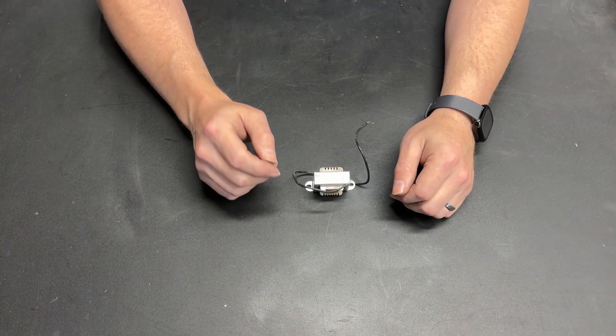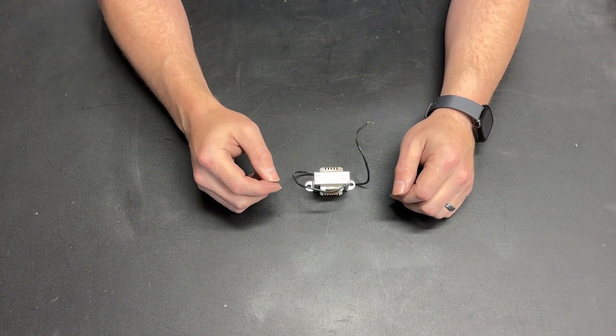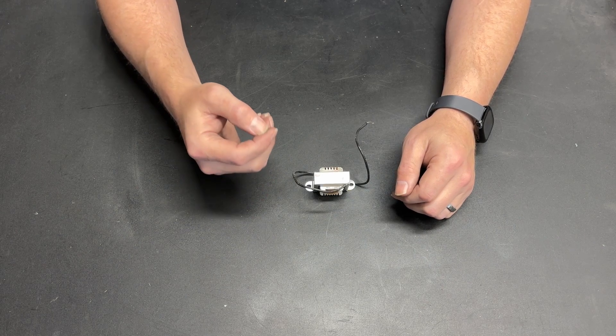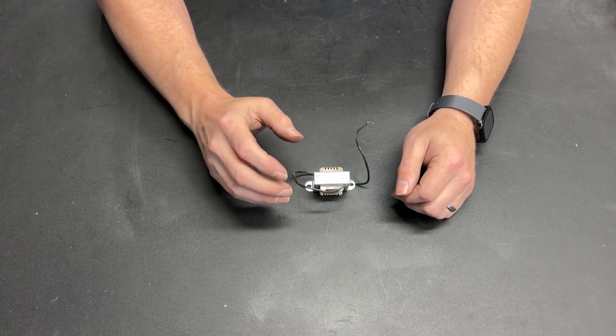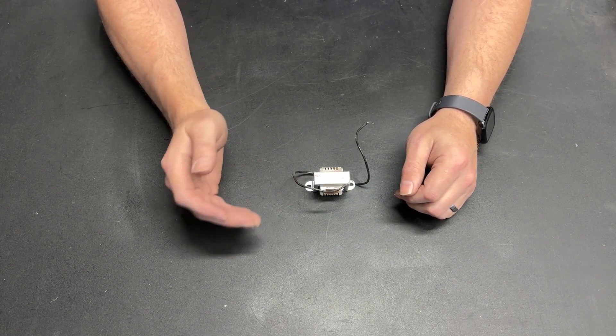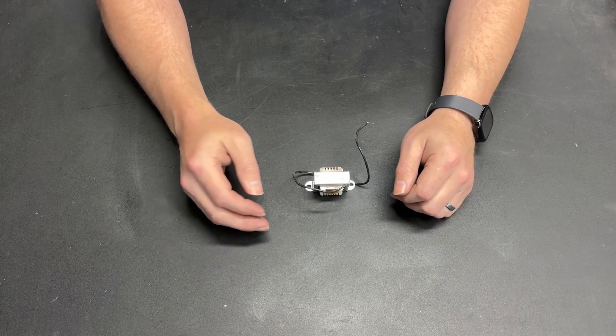Every time we get a spark, that's a tiny amount of the brush, or a tiny amount of the copper ring that the brush is riding on, actually burning up. So, it makes sense that if we're reducing sparks, we're prolonging the life of our motor.